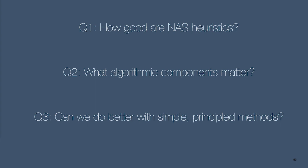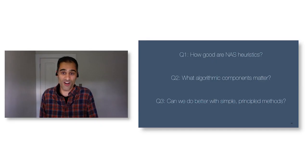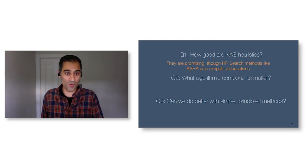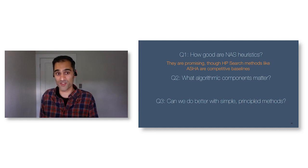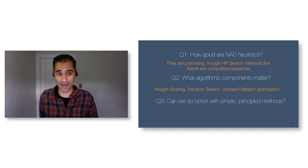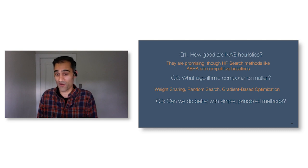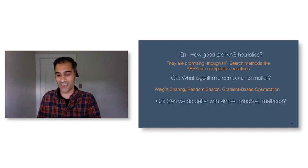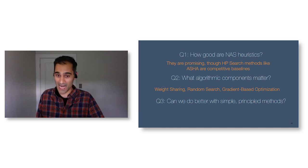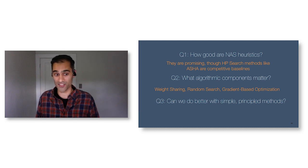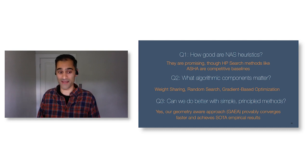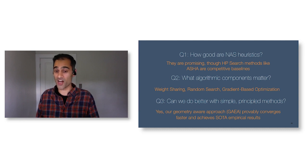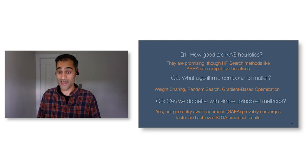Stepping back, the motivation behind this talk was to ask fundamental questions about NAS heuristics. First: how good are NAS heuristics? They're quite promising, but hyperparameter search methods like ASHA are competitive baselines and arguably more robust on new problems. Second: what algorithmic components matter? Weight sharing is really powerful, random search is powerful, and gradient-based optimization seems to work well. Third: can we do better? Yes—we can augment existing gradient-based methods via our gradient-aware approach, which endows these methods with provably faster convergence guarantees and achieves state-of-the-art empirical results.